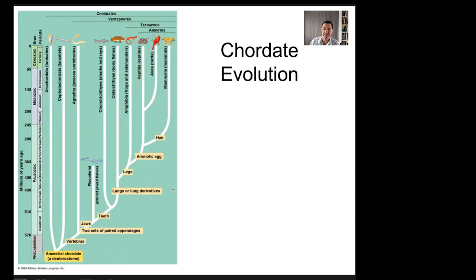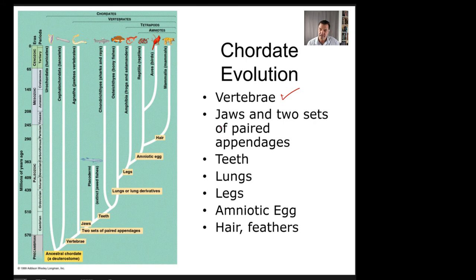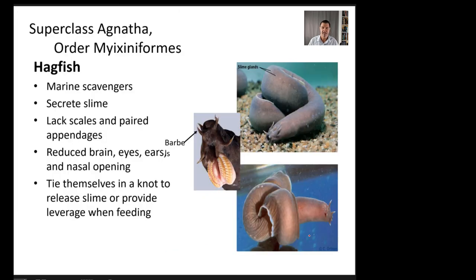Looking at chordate evolution, we'll see changes occurring in a fairly consistent sequence: first vertebrates appear, then jaws, then chewing mouthparts, teeth, lungs and legs, then the amniotic egg, hair, and feathers — taking us all the way through birds and mammals.